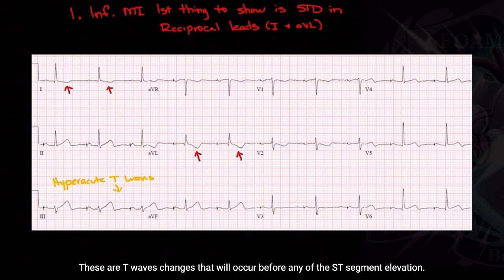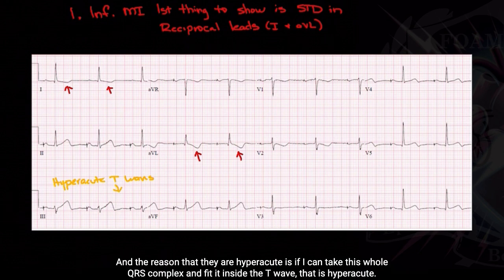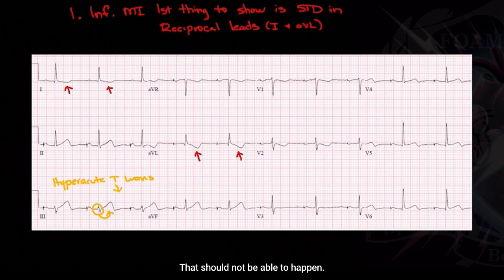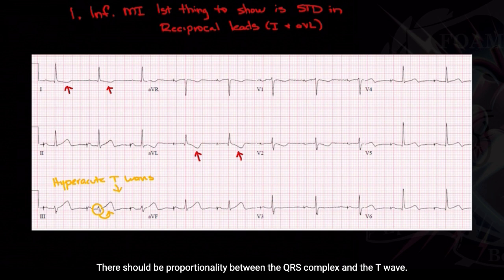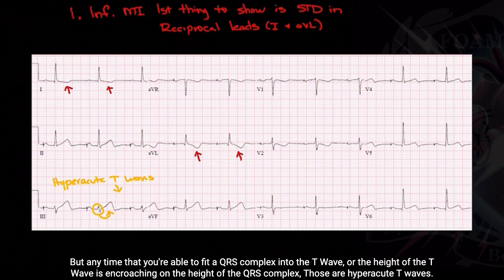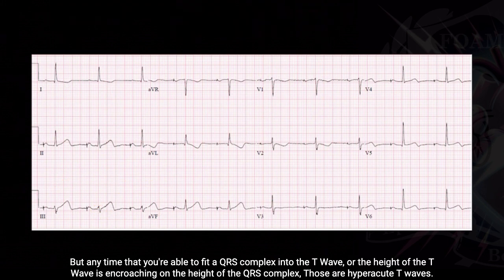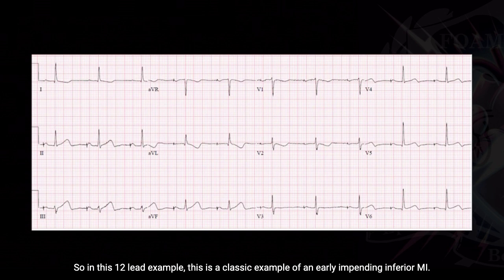Lead III has something known as hyperacute T waves. These are T wave changes that occur before any ST segment elevation. The reason they are hyperacute is this: if you can take the entire QRS complex and fit it inside the T wave, that is hyperacute. There should be proportionality between the QRS complex and the T wave in a normal 12-lead — the QRS should tower over the T wave. But anytime the T wave height is encroaching on the height of the QRS complex, those are hyperacute T waves.